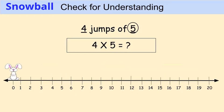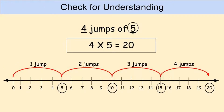Our second contestant is Snowball. Snowball is going to show us four jumps of five, so the multiplication problem is four times five. Pause the video, create the number line to help you find the product of four times five, then unpause the video when you are ready to check your answer. If you said four times five equals twenty and your number line looks like mine, then you are correct.